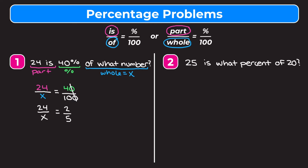Now we're going to solve this proportion. I'll show you a shortcut: proportions set two fractions equal, and to make equivalent fractions we multiply or divide the numerator and denominator by the same number. Looking at the numerators, how do we get from 2 to 24? We multiply by 12. So to keep the fractions equivalent, we must multiply 5 by 12 to find x. 5 times 12 is 60, so x equals 60.